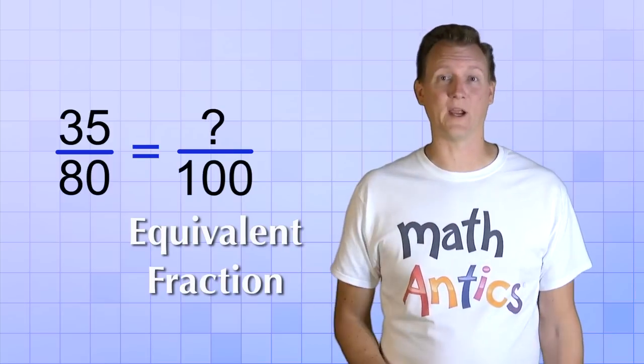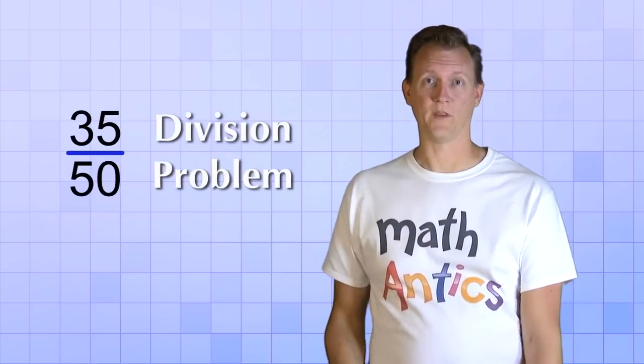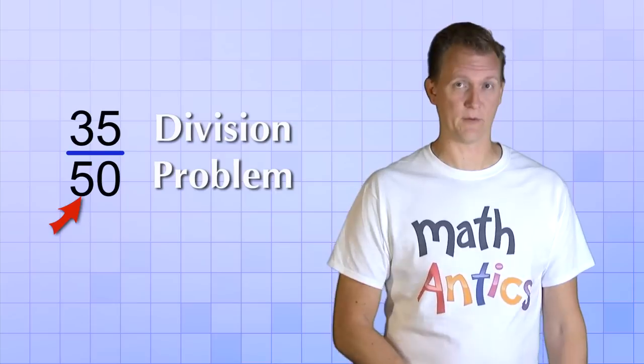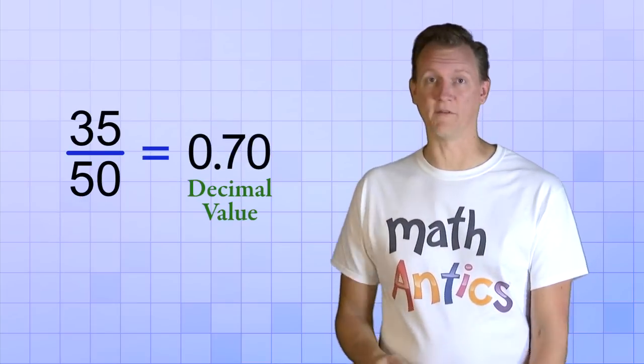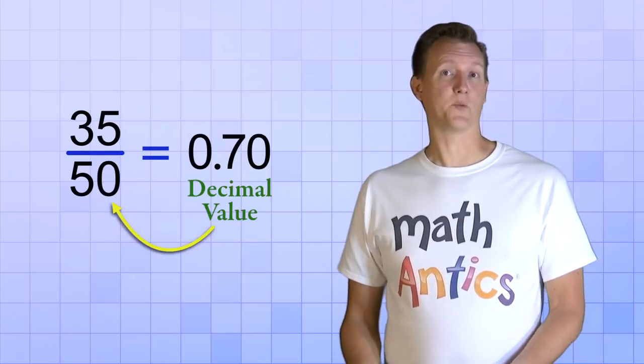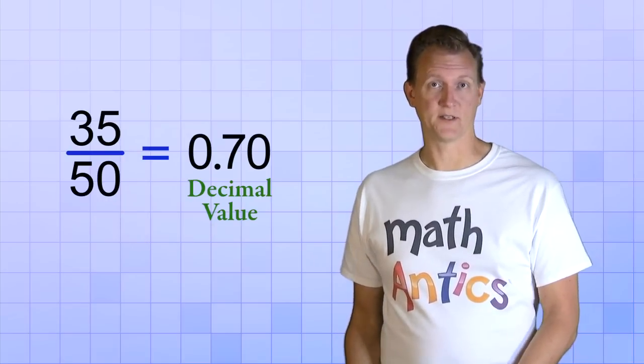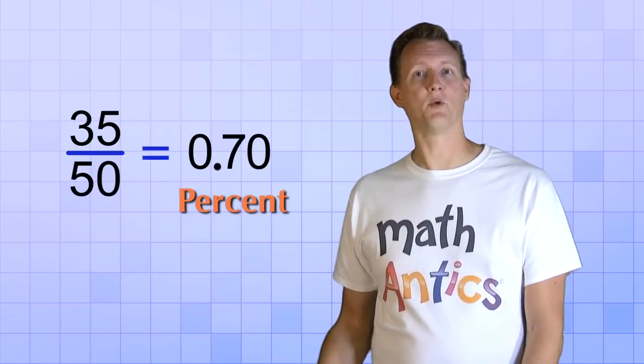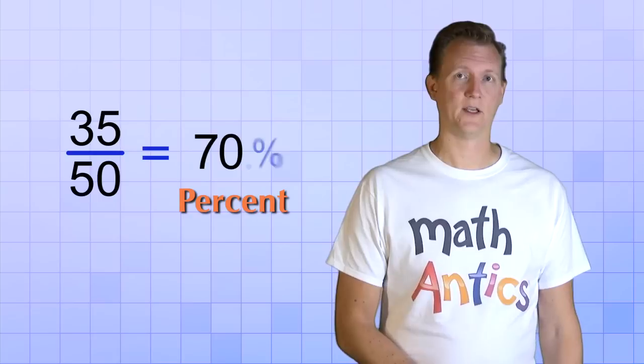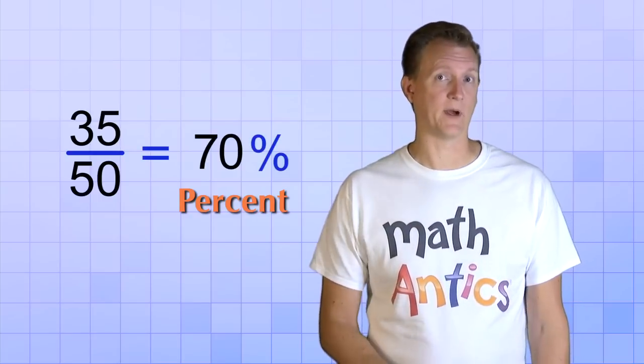This second way is based on the fact that a fraction is just the division problem, where the top number is divided by the bottom number. If you do the division, you'll end up with a decimal value of the fraction. And, as we saw in our first video about percents, it's easy to convert from a decimal value into a percent. You just move the decimal point two places to the right, which is the same as multiplying by 100.